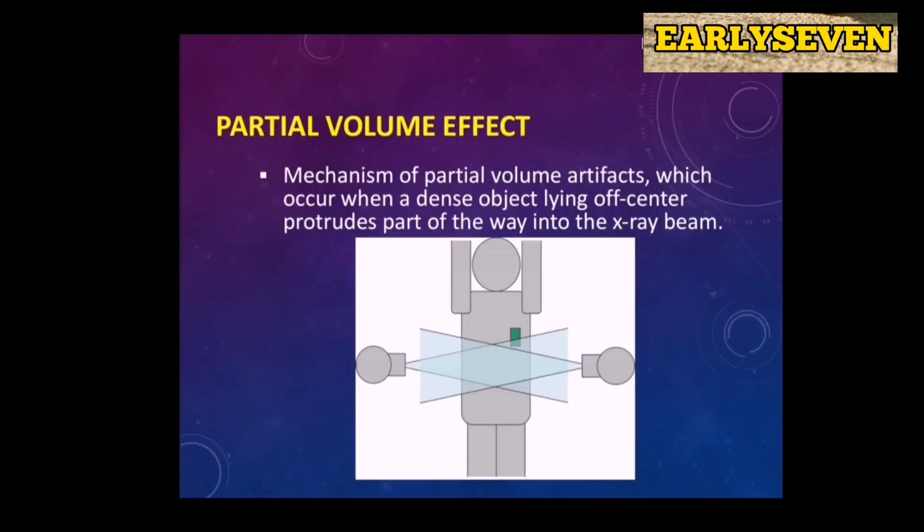Partial volume effect happens when a dense object lying off-center protrudes part of the way into the X-ray beam, causing partial volume artifacts.